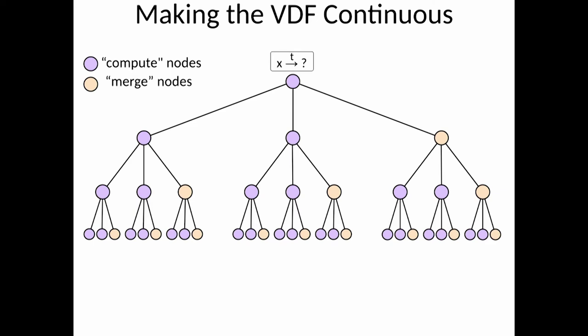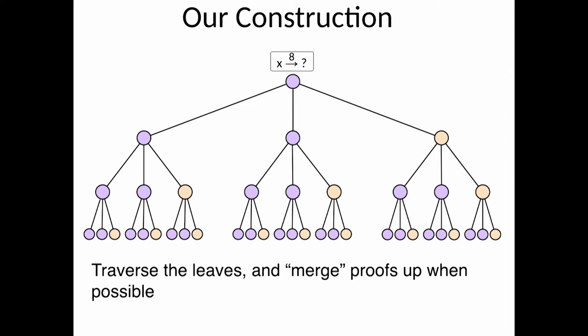So let's see how the proof works. We're going to traverse the leaves of this tree. The leaves of the tree correspond to the steps of the computation. So you do two steps of computation and then the proof for those two steps. But you don't want to remember all the steps and the proofs that you did so far, so you're going to merge proofs along this tree, trying to keep your state as small as possible.